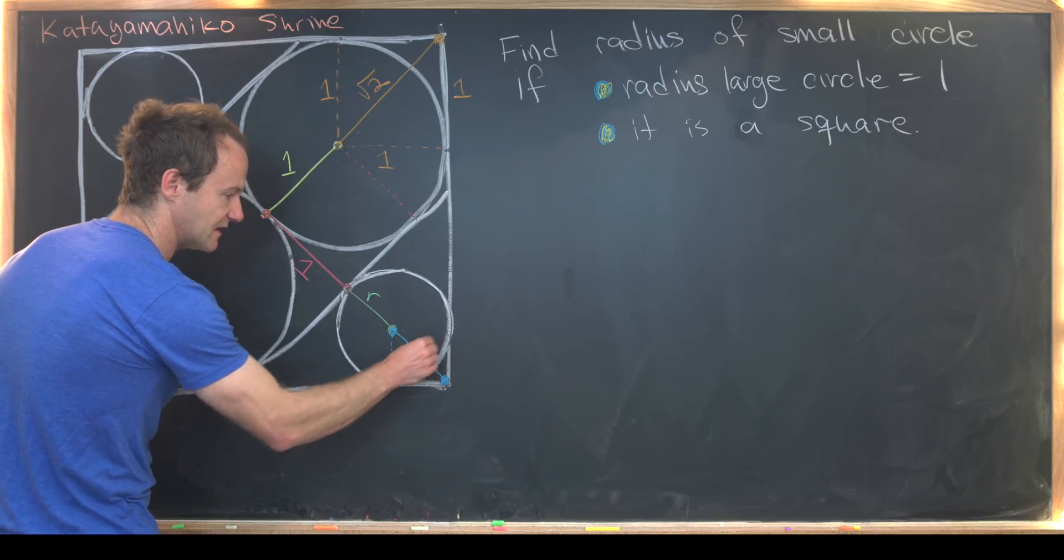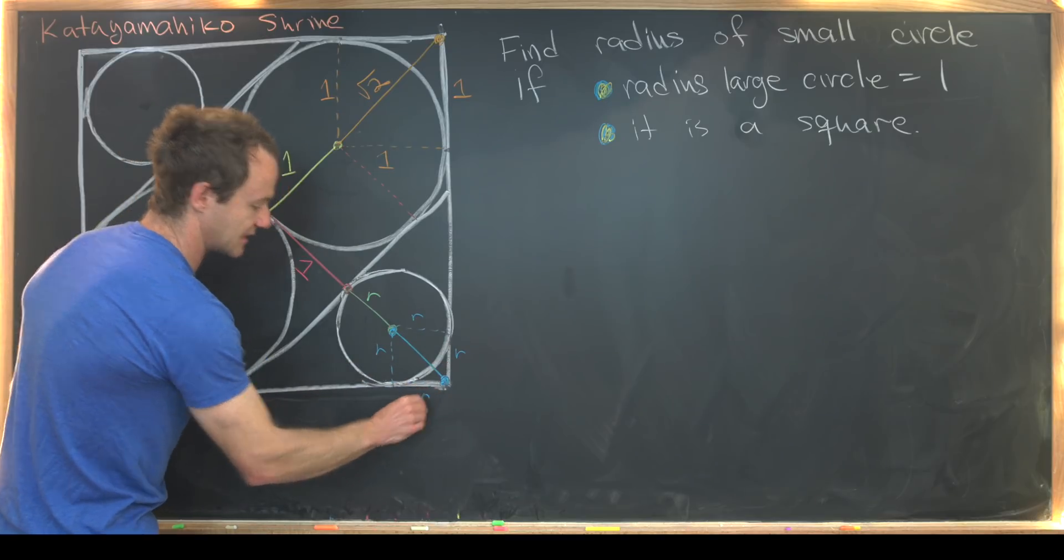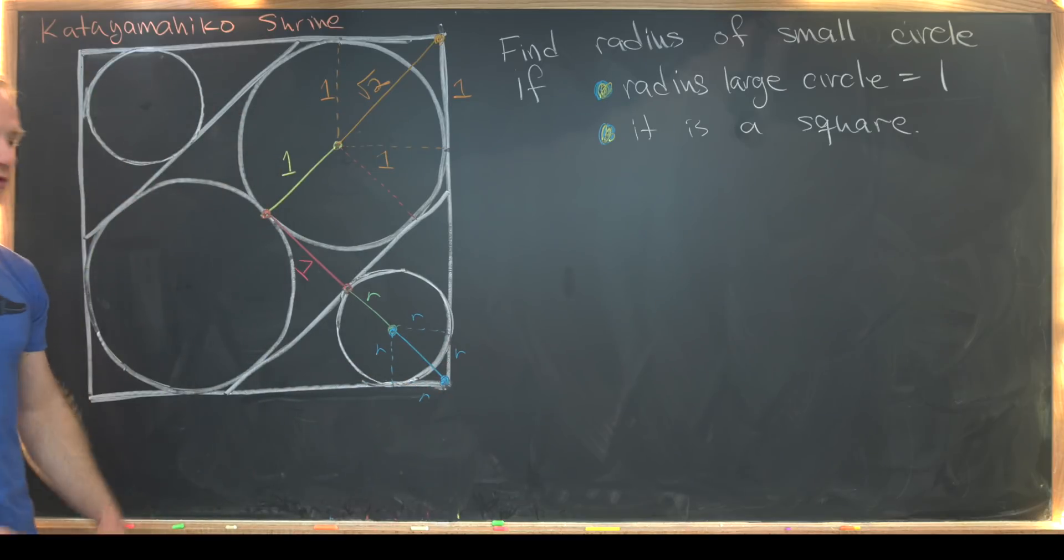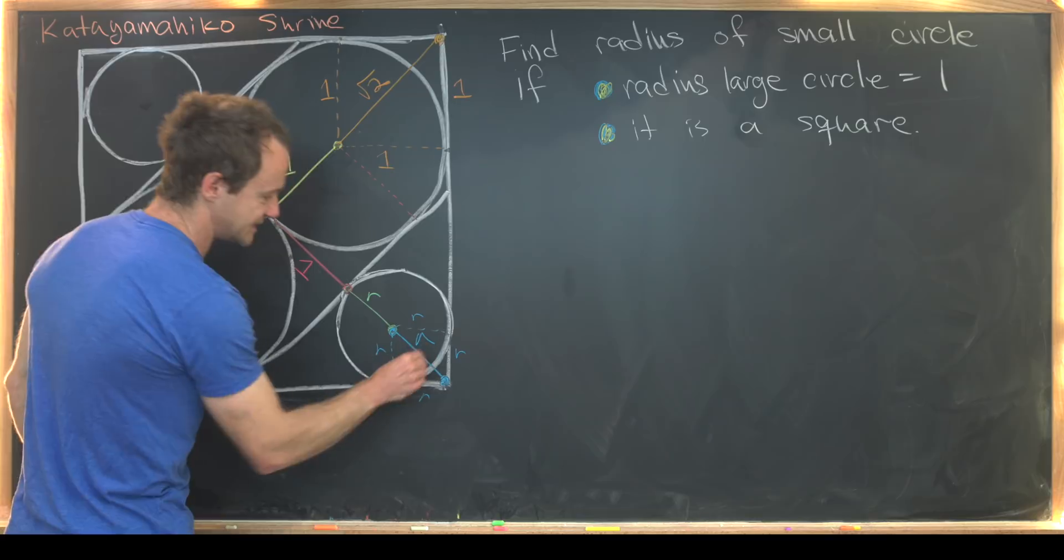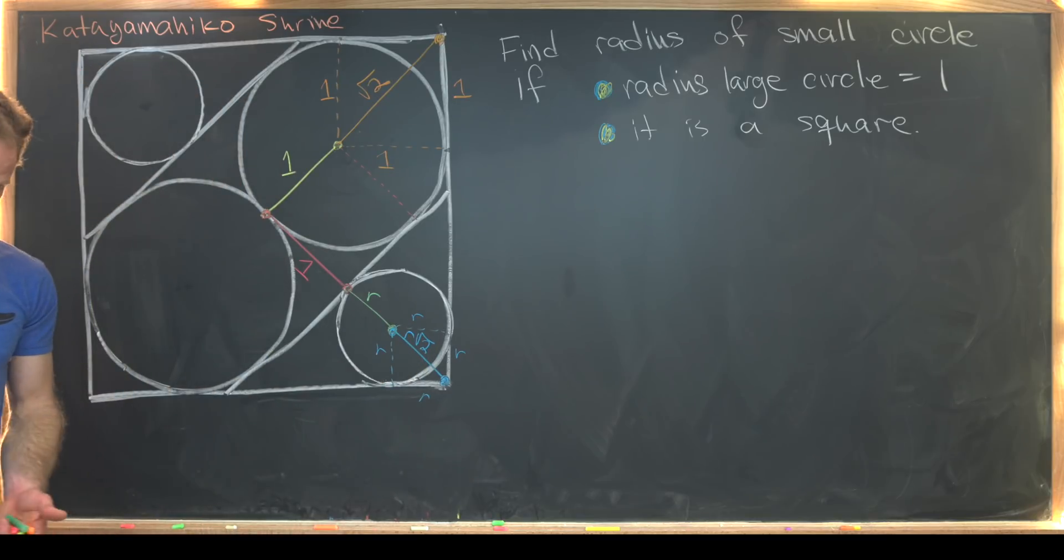And now we can go ahead and calculate this length here the same way we calculated the orange. So we'll complete this into a square. We see that it's a square with side length r. Then using the Pythagorean theorem, we see that this bit right here is going to be the square root of 2 times r.